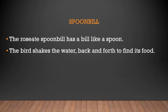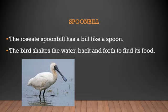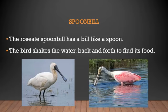Next is the spoonbill. The roseate spoonbill has a bill shaped like a spoon. The bird shakes the water back and forth to find its food — the water is removed and only insects or worms are left in its beak. This special bird and its beak are called the spoonbill.